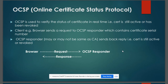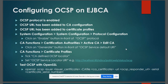The purpose of OCSP is to check the status of a certificate in real time. In order to configure OCSP on EJBCA we need to do three things: first, ensure that the OCSP protocol is enabled; second, the OCSP URL has been added to the CA configuration, which is optional; and finally, the OCSP URL has been added to our certificate profile.